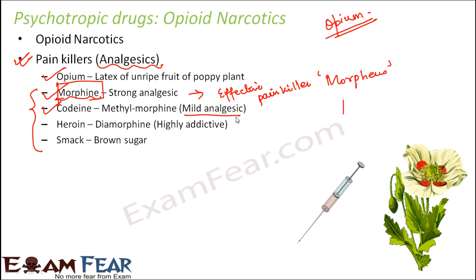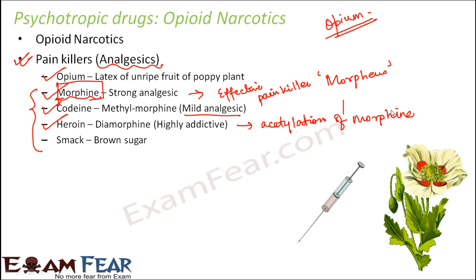Heroin is a highly addictive painkiller. If you regularly take heroin you get completely addicted to it, and it is three times more potent than morphine. Heroin is formed from morphine by acetylation. Major after-effects of taking heroin include indigestion, reduced vision, weight loss, and infertility — which is why one should always stay away from these drugs.